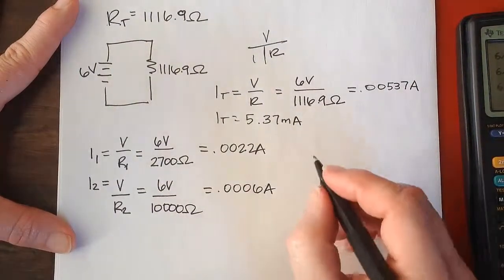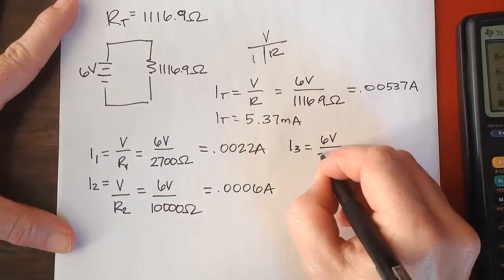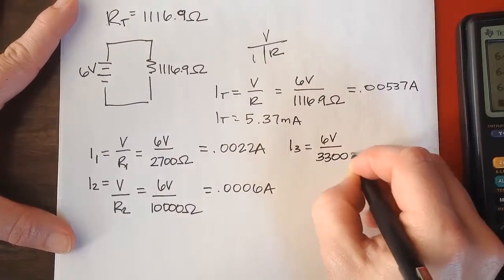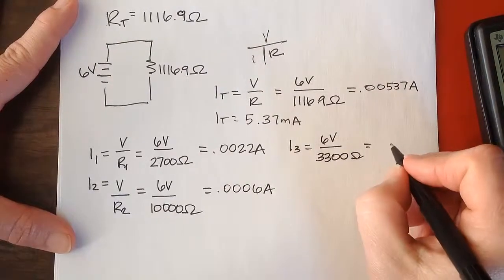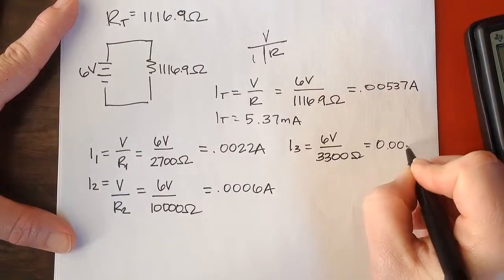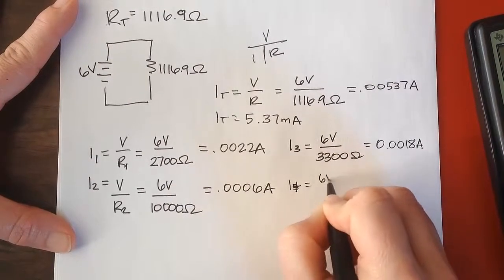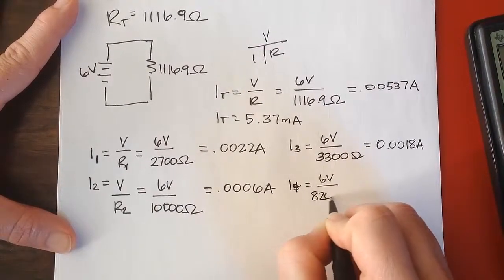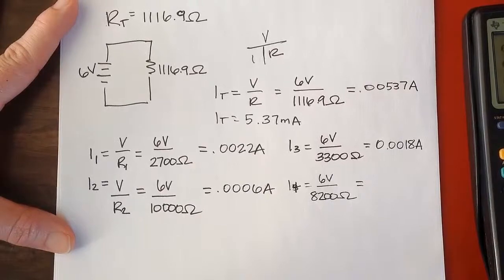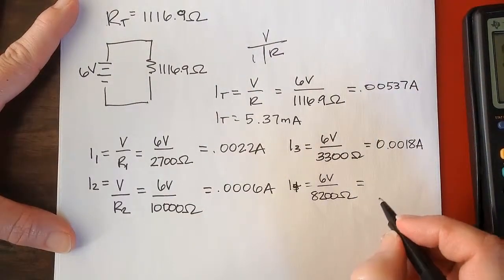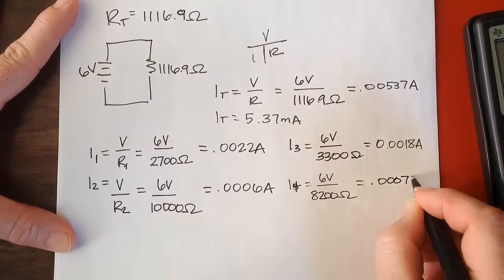And then I3 will be 6 volts over 3,300 ohms. It's going to be 0.0018 amps. And then I4 will be 6 volts divided by 8,200 ohms. I get 7.32 times 10 to the negative 4, so 0.00732 amps.